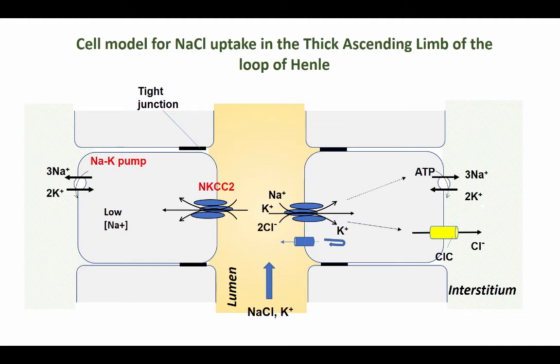The tight junctions that you find between the cells of the thick ascending limb have a very high resistance and also make it impermeable for water to easily flow from the lumen into the interstitium. So the net result is that the thick ascending limb is impermeable to water.